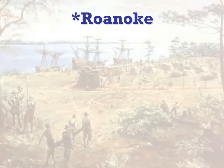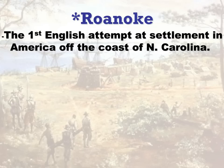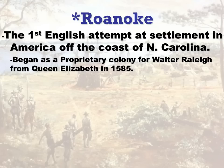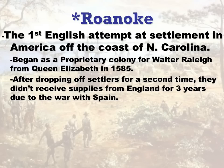Roanoke is the first attempt at English settlement in North America, and it happened off the coast of North Carolina. It began as a proprietary colony. Sir Walter Raleigh was given land opportunities by the Queen in 1585, and he sent over a couple of groups of people to settle and colonize. After dropping off these settlers, they actually got picked up after Francis Drake was in Spanish Florida defeating the Spanish. He picked up a group and brought them home. Then they went and dropped off another group, led by a man by the name of White.